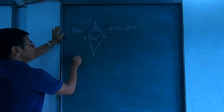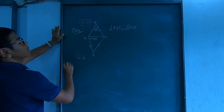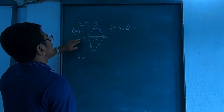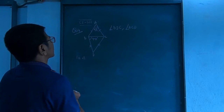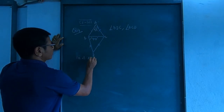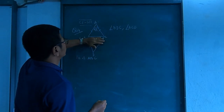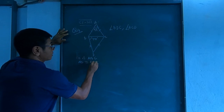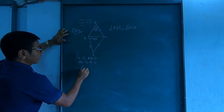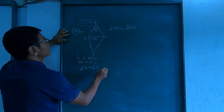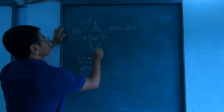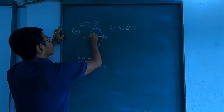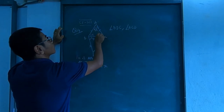Let us work in triangle ABC. We look only to the top. AB equals AC. Therefore, angle B equals angle C. Let us call it X, so I will mark both angles as X.